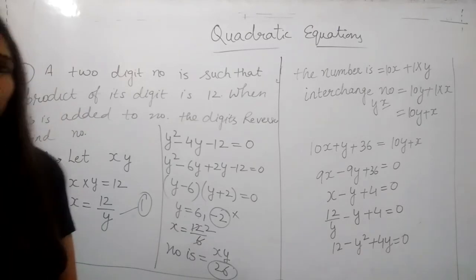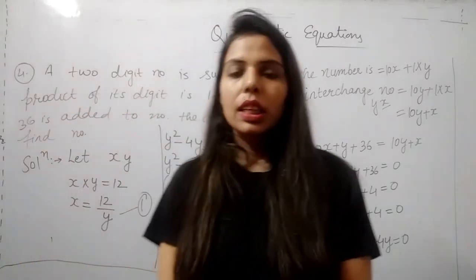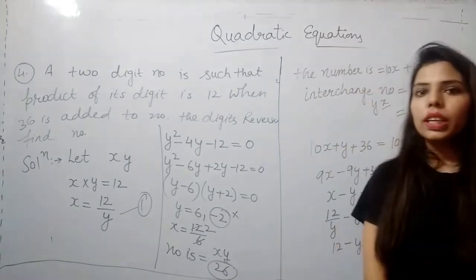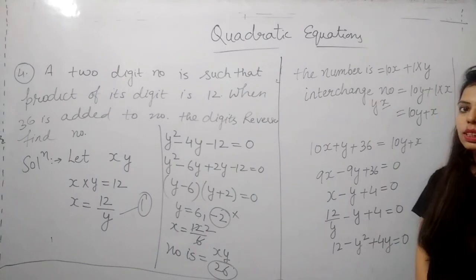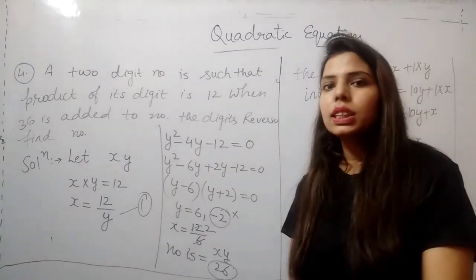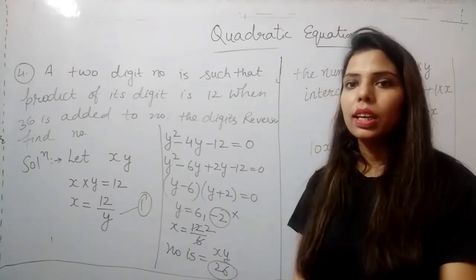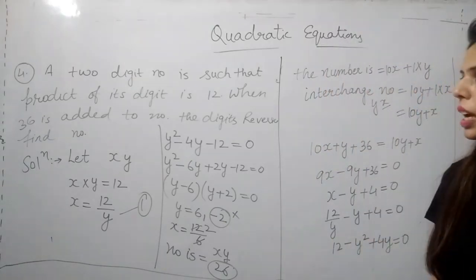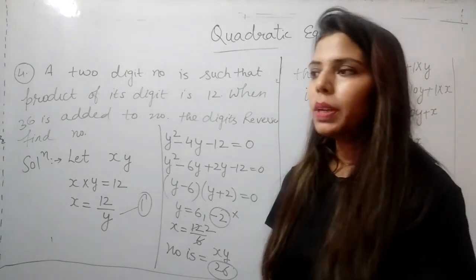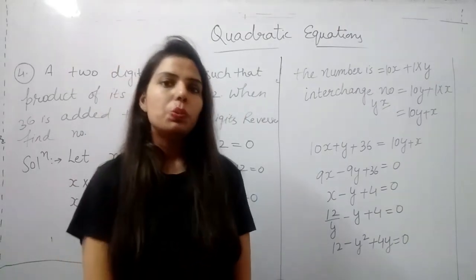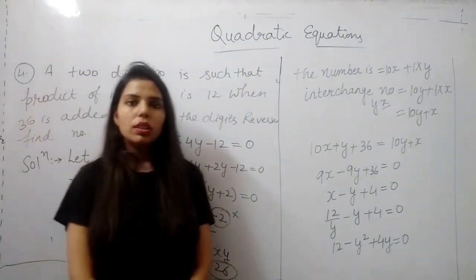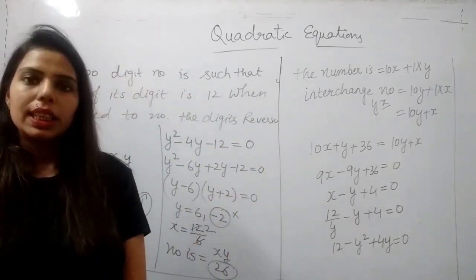So this was a problem related to digits. Today in this lecture we have discussed three kind of problems. One is if nature of the roots is given how to find the missing coefficients. Second we discussed about number related problems. And thirdly I have discussed the problems which are related to digits. In the next lecture we will be discussing about more problems which are related to speed, time, distance, and work. Such problems we will be discussing in next lecture.